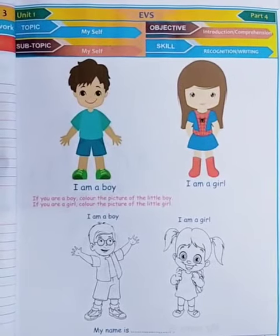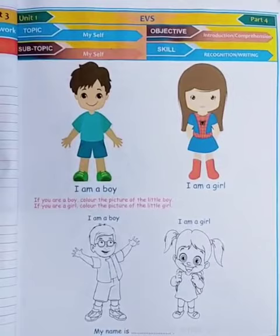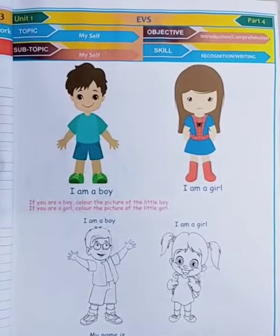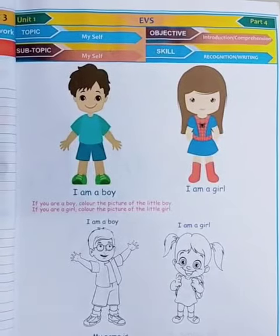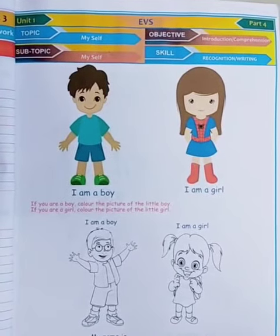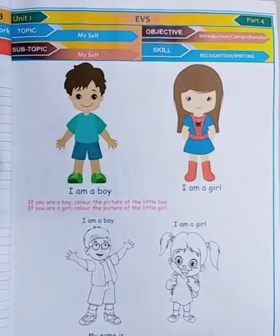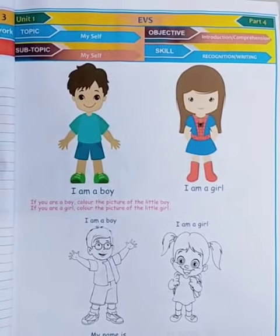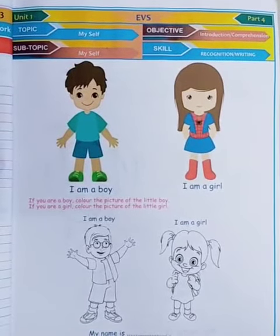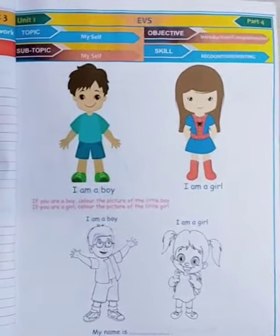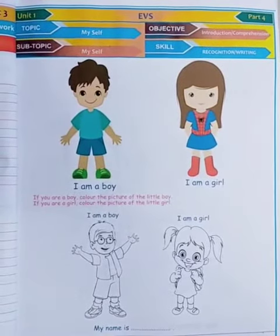Look at these two images — one picture of a boy and another picture of a girl. The boy is saying 'I am a boy' and the girl is saying 'I am a girl.' If you are a boy, write your name in the given place: 'My name is ___.' You have to write your name in the blank place, and if you are a girl, you have to write your name there.